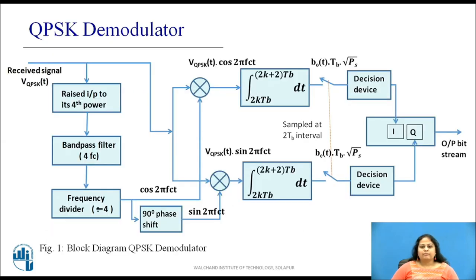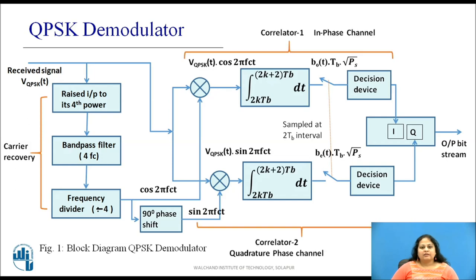Figure shows the block diagram of QPSK demodulator. As shown it consists of a carrier recovery circuit, two correlators and a parallel to serial converter. As it uses correlator we can say this is the coherent or synchronous method of QPSK demodulation. Let us see in detail how it works.